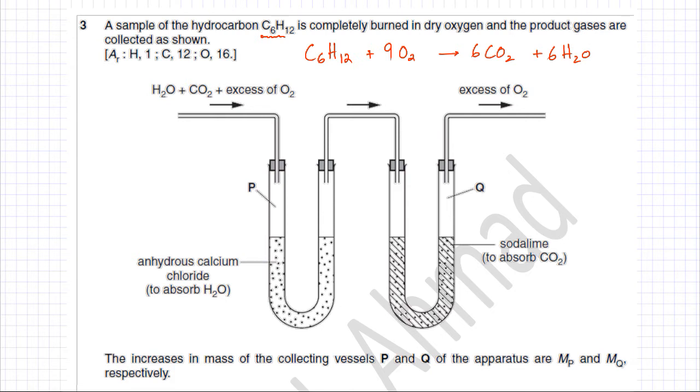The question now states that the water and carbon dioxide that are produced are passed through two tubes, one containing calcium chloride and that's absorbing H2O. So the water molecules produced during combustion are absorbed by container P, and container Q is used for absorption of carbon dioxide. It has soda lime in it absorbing carbon dioxide. The two products are absorbed by each of the two tubes P and Q.